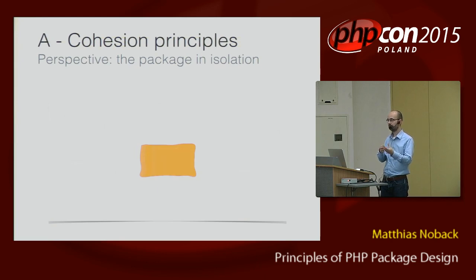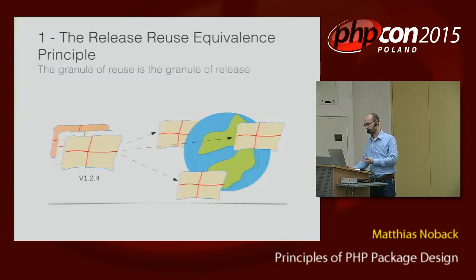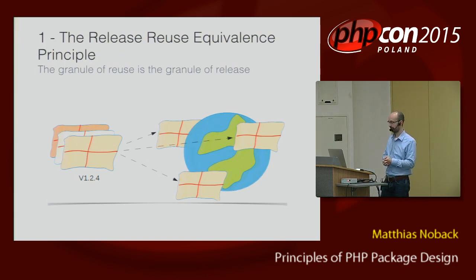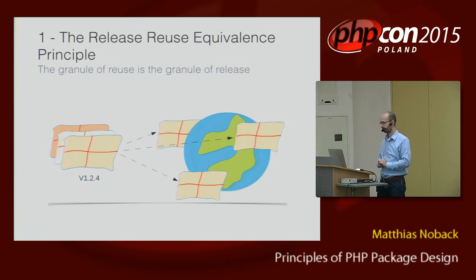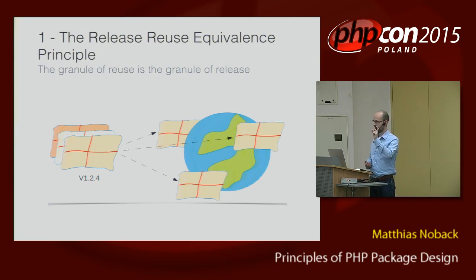Cohesion is about one package and what should be inside that package and what should be outside. We look at the package in isolation and ask ourselves: what does belong inside, what should be outside of it? The first principle is called the Release-Reuse Equivalence Principle. The granule of reuse is the granule of release. This means that you can reuse as much code as you can possibly release, and the unit of reuse — whatever you can reuse — is a package.